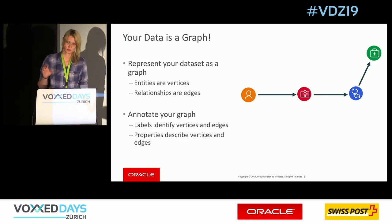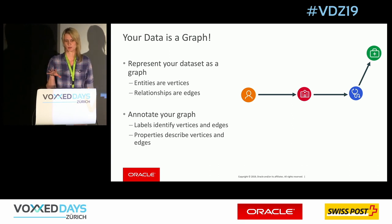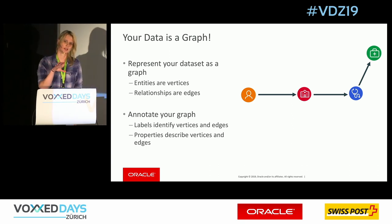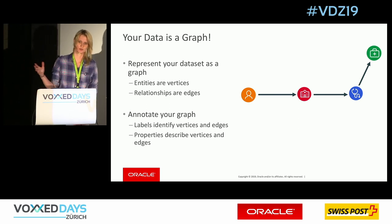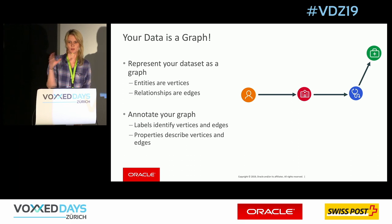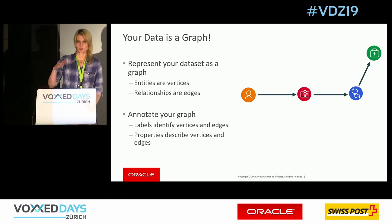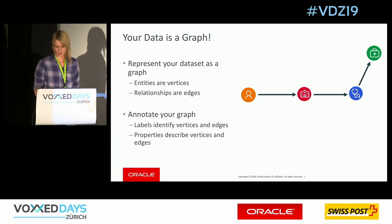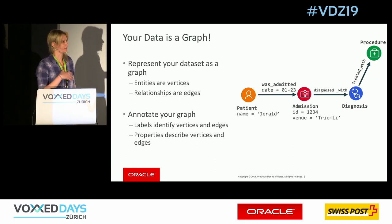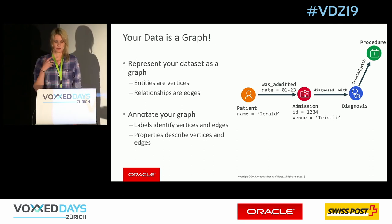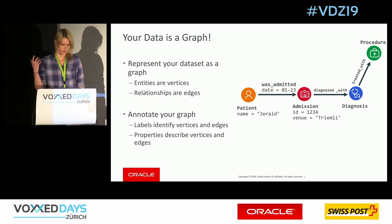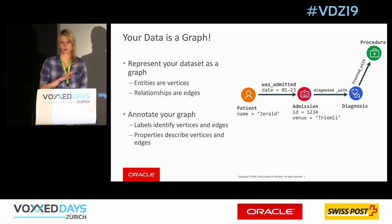The model we use is the property graph model, where you have labels that identify the types of the vertices and edges. Coming from the relational space, these are the table names, and the properties are the things that describe an entity more. For example, if you have a patient, you could have properties like name, age, date of birth.